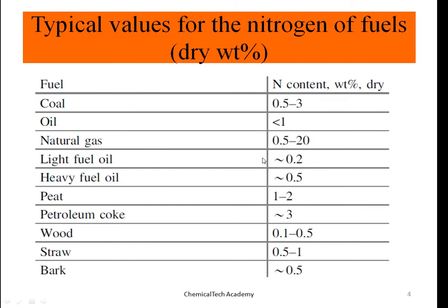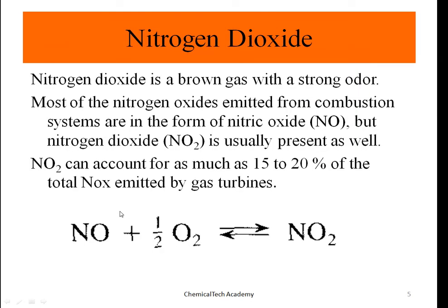Nice fuel oil is around 0.2%, heavy fuel oil 0.5%, peat 1 to 2%, petroleum coke around 3%, wood 0.1 to 0.5%, straw 0.5 to 1%, and bark is 0.5% nitrogen content.